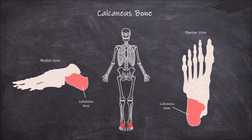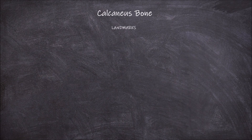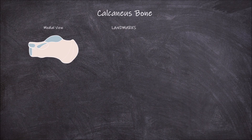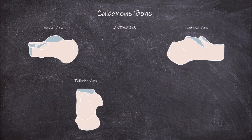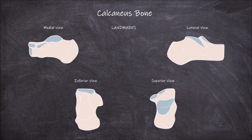Now we are going to look at the different landmarks and features of this bone. Here we have the medial view, the lateral view, the inferior view, and the superior view of the right calcaneus bone. This bone is rectangle-like in shape and is the largest of the tarsal bones of the foot. This bone consists of six surfaces.